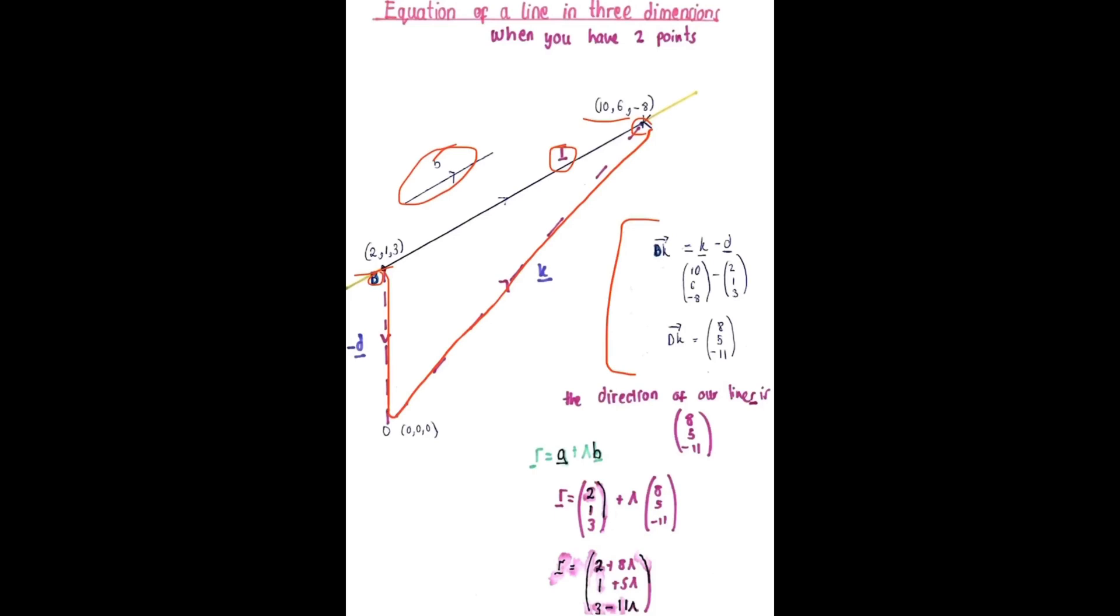So we get our direction to be 8, 5, negative 11. From here simply sub in your results into the formula R equals A plus lambda B. You could choose to sub in the coordinates for K in place of A or for D in place of A as I've done here.